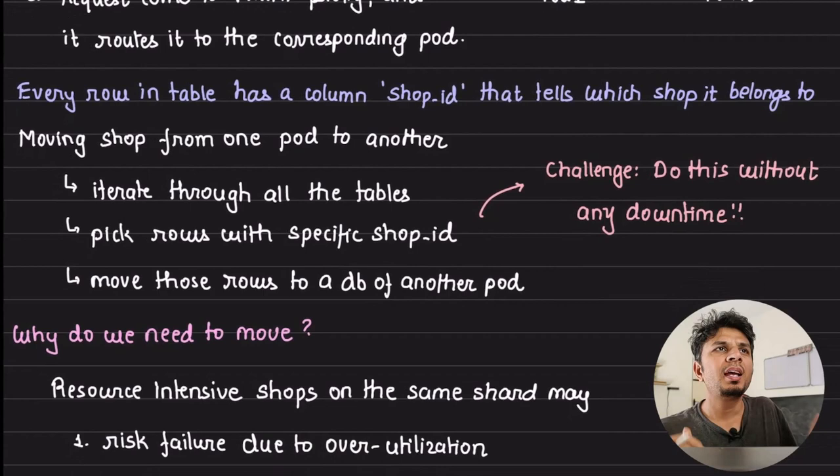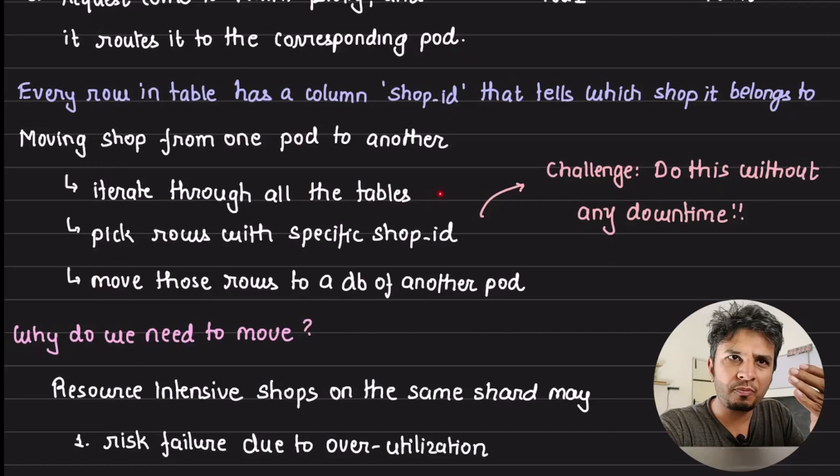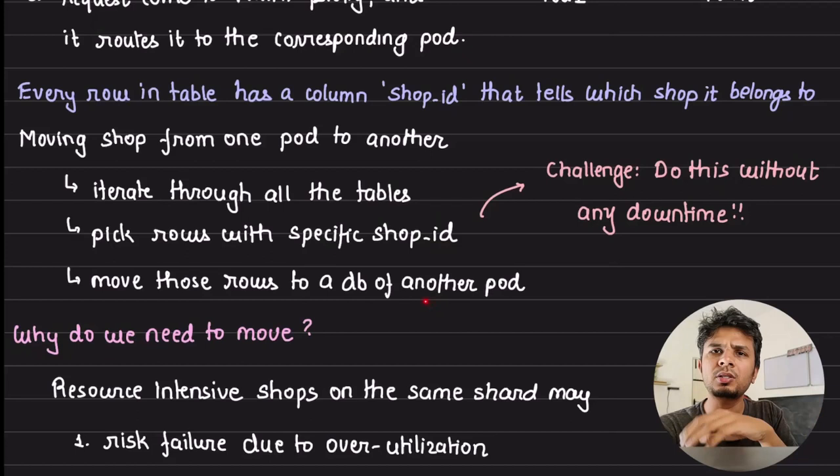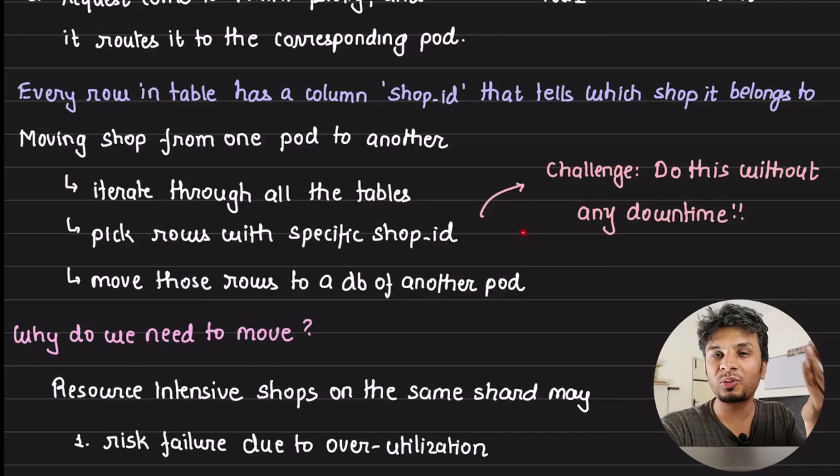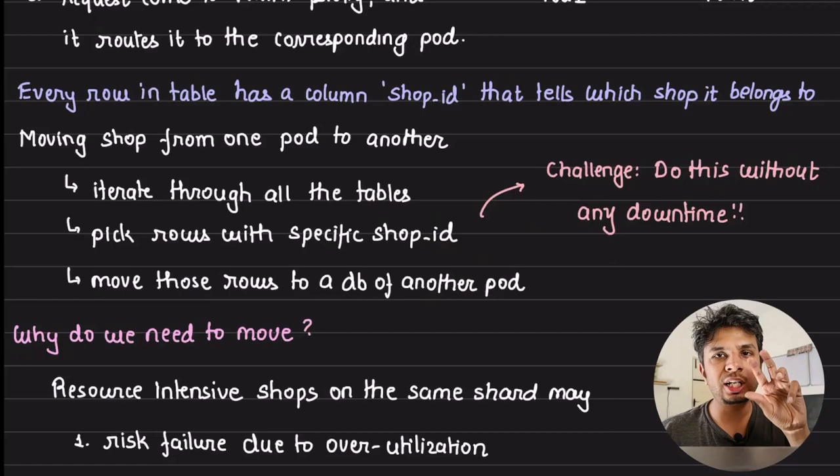A naive approach is to iterate through all tables, pick rows with a specific shop ID, and move them to another database. The problem is downtime: a shop can have a huge number of rows, and if migration takes an hour you can't have your site down for that long. So you have to move data from one database to another without incurring any downtime.